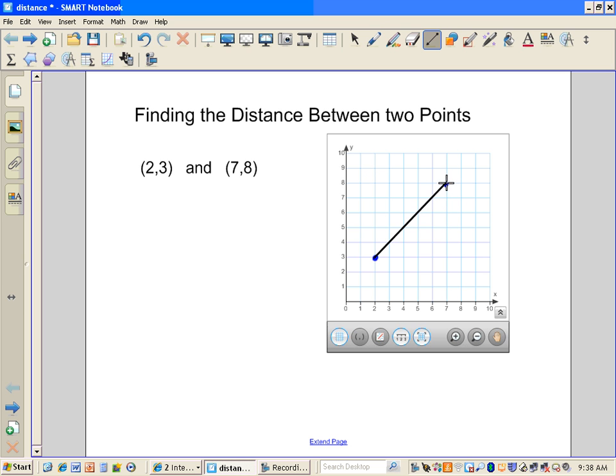Now, we can't just count the boxes because we know that the diagonal of a square is longer than the side length. So to find the distance between these two points, some of you might say, make it into a triangle. Well, we did that practice of the Pythagorean Theorem.